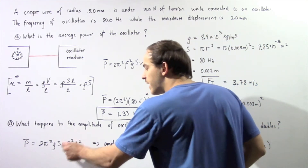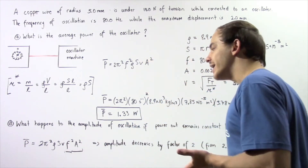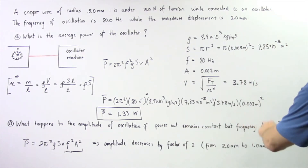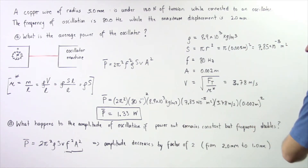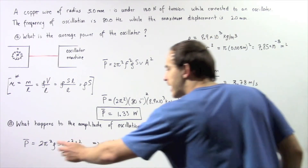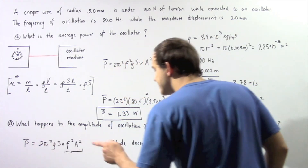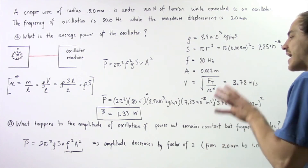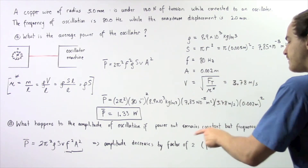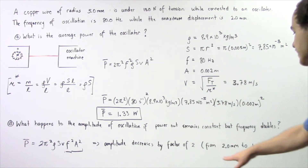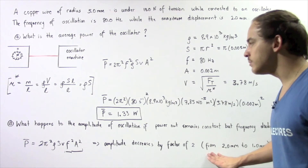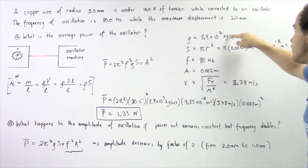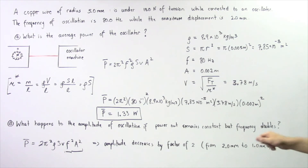So four divided by four equals one, keeping power constant. When we increase our frequency by a factor of two, the amplitude must decrease by a factor of two. That means our amplitude goes from 2 millimeters to half that value, which is 1 millimeter.